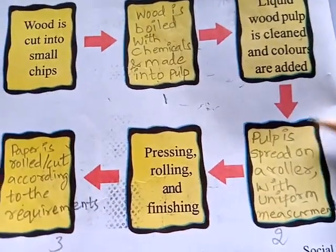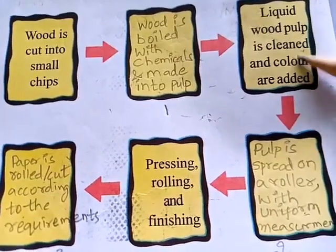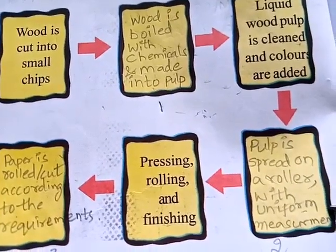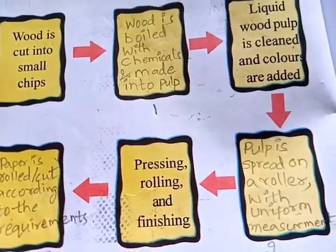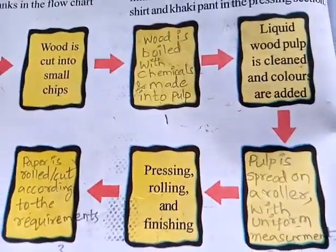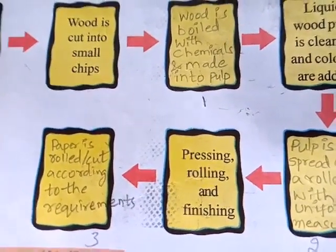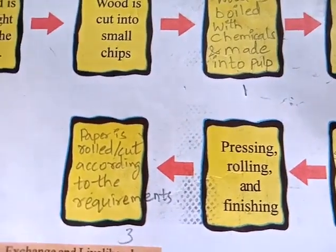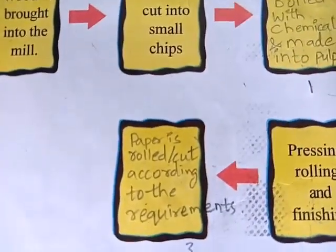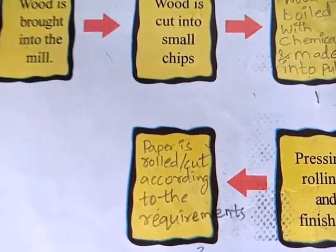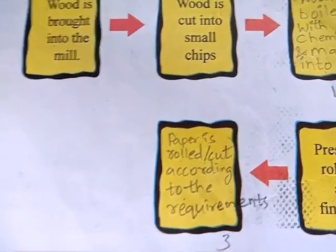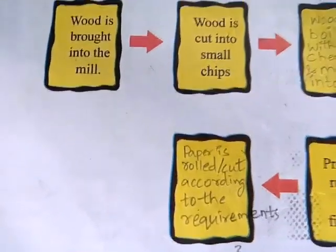After colors are added and cleaning, the pulp is spread on a roller with uniform measurements — meaning equal measurements. Then the next process: pressing, rolling, and finishing. After that, the last process: paper is rolled or cut according to requirements — A1 size or A4 size. Book paper size is somewhat larger than our notebook sizes. Depending on the required size, the paper is rolled and cut. This is the flowchart. You too have to fill this in your textbook.